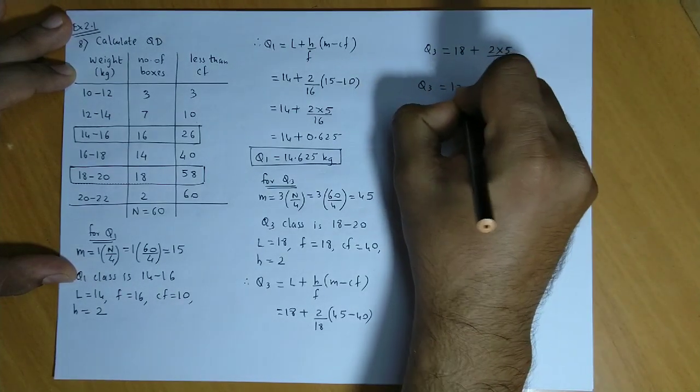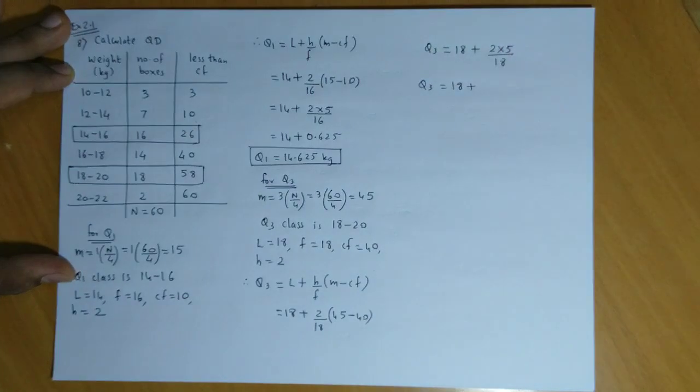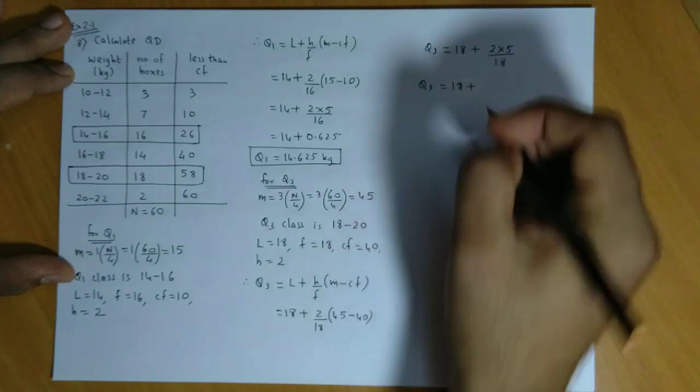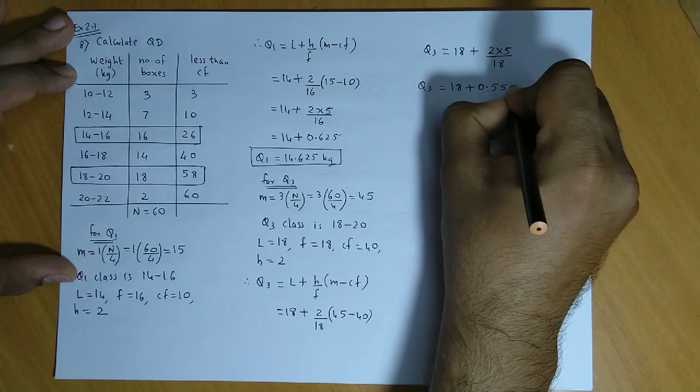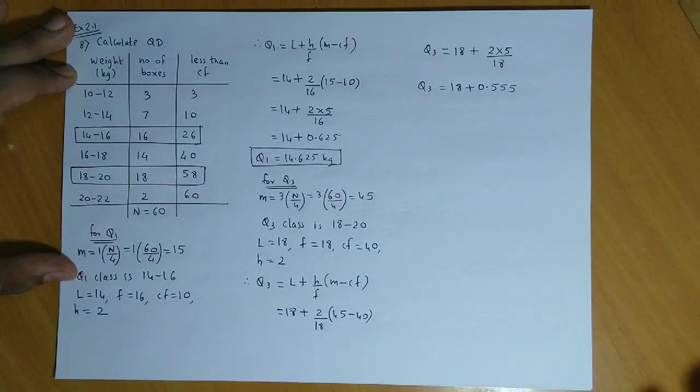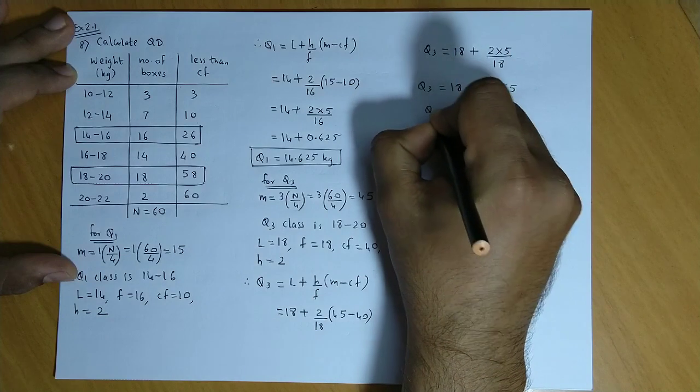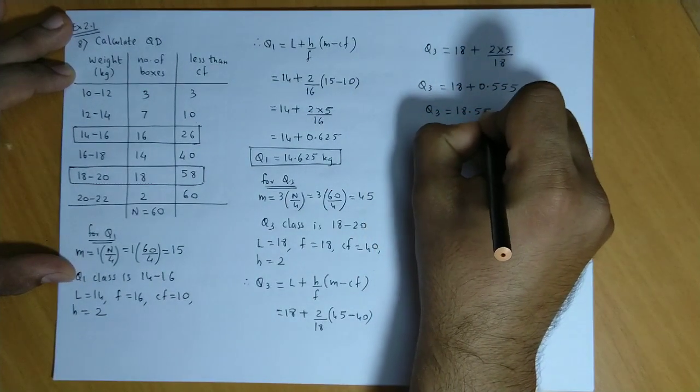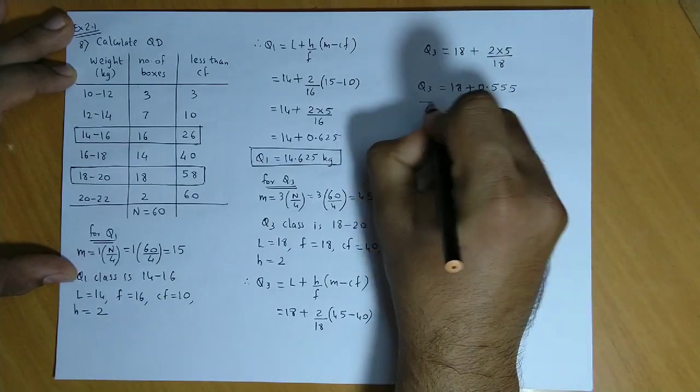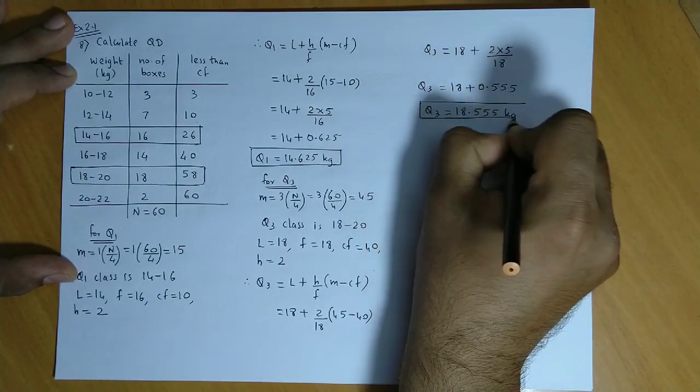Q3 is 18 plus, again 2 times 5 is 10, 10 divided by 18 is 0.555 or 0.556. So Q3 equals 18.555 kg.